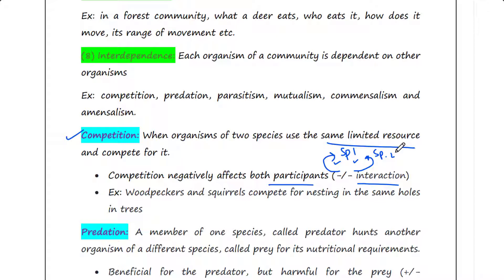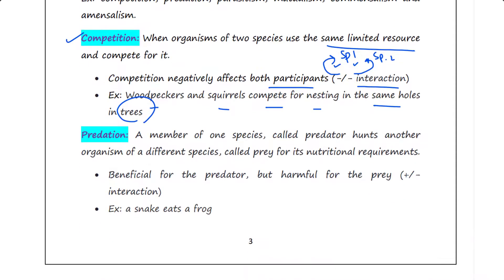Both species are competing with each other and both are getting harmed — they can be injured and will lose their energy. For example, woodpeckers and squirrels compete for nesting holes in the same trees. This is an example of competition. Next is predation.